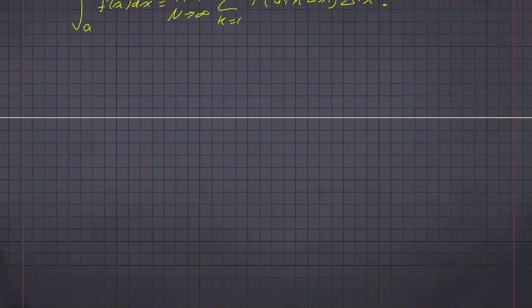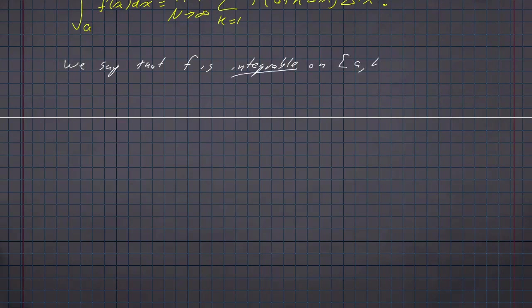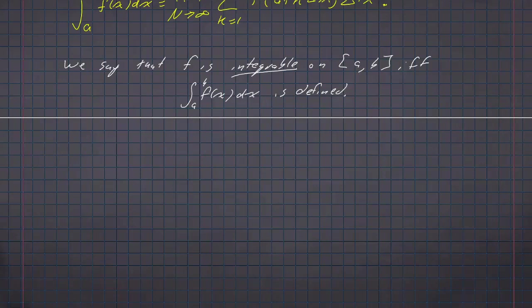So before I get to the example, one last quick definition: we say that f is integrable when this limit exists; if it does not exist, then the function is not integrable on that region. Now I can go on to an example. Let's calculate the integral from 0 to 2 of x squared dx.